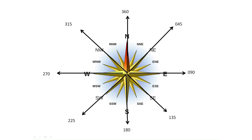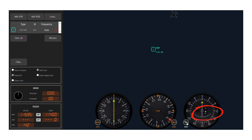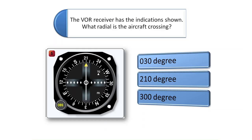VORs can be a bit confusing at first, so let's look at another diagram. VORs transmit radials outward in all 360 degree directions, similar to the compass rose shown. From the previous example, we would be flying towards the 210 degree radial and there would be a to indication shown. However, we are still flying on the 030 radial since that is the 180 degree reciprocal of the 210 radial. Remember, the to/from indicator was showing a from indication when the CDI needle was centered on a heading of 030. The aircraft would therefore be crossing the 030 radial.